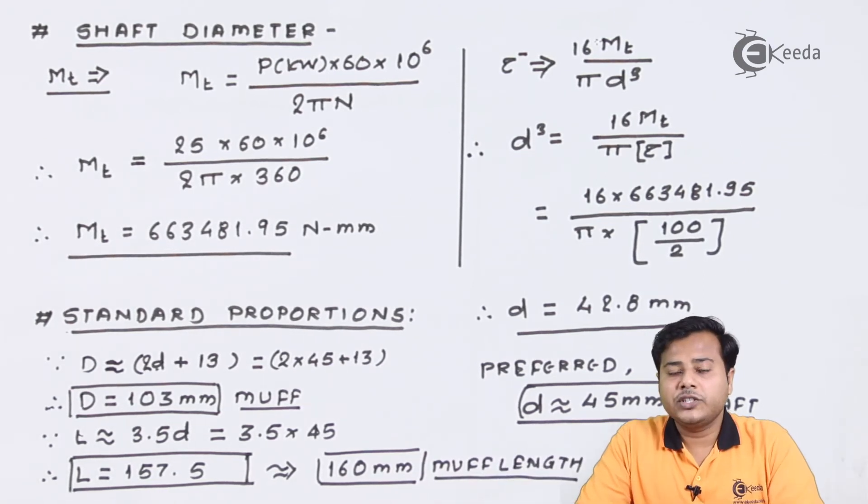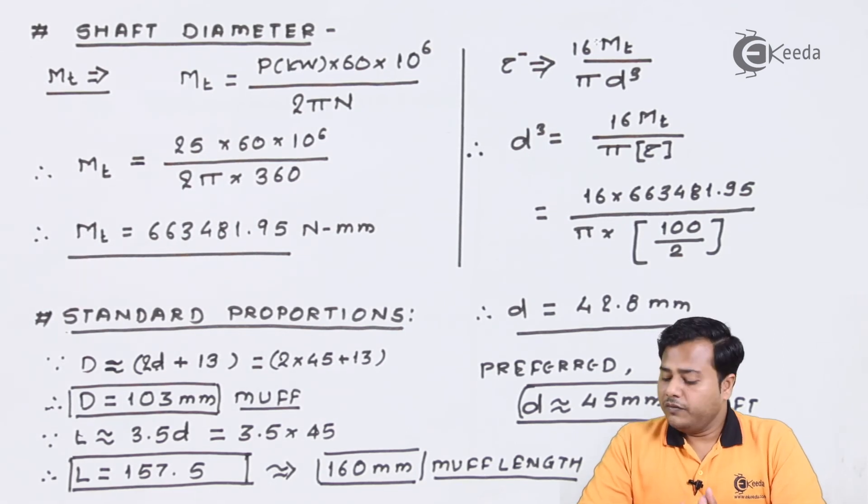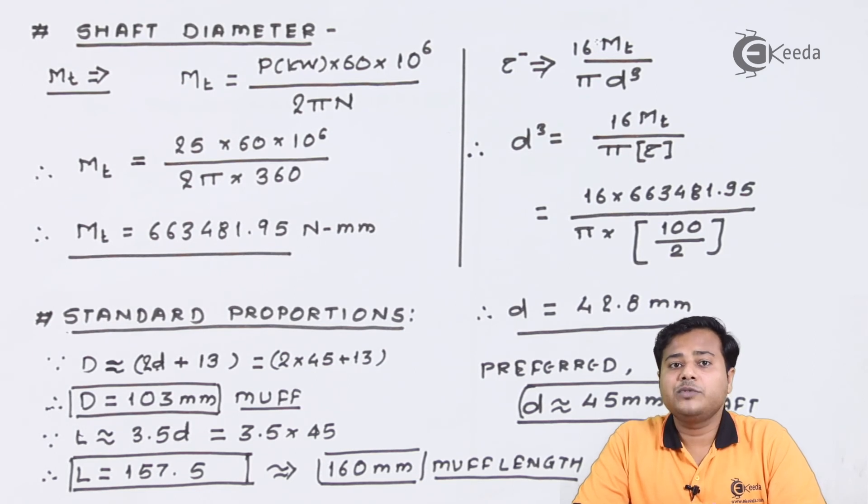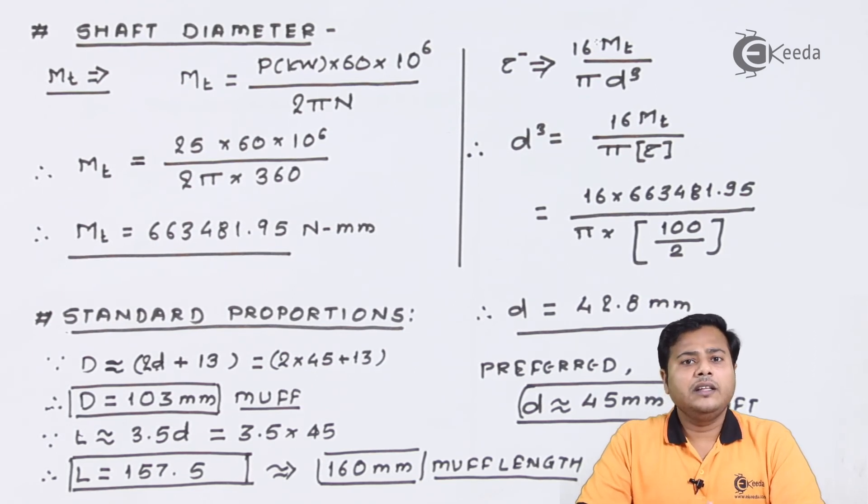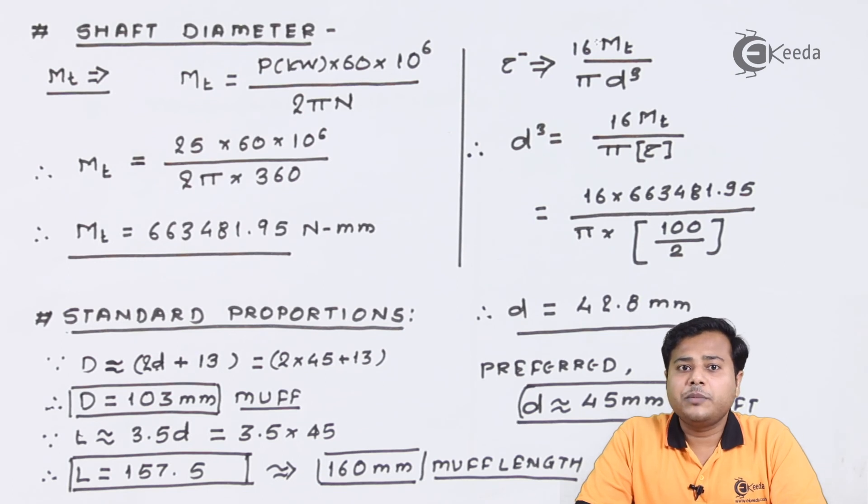So this was for this session where we have designed, we have selected the material first, then we have designed the shaft, and then we have gone for the standard proportions of the muff in terms of the outer diameter and the length. In the next session we'll look at the design of keys and other parameters. Thank you so much for watching this video. If you like this video, please subscribe to Ikeda.